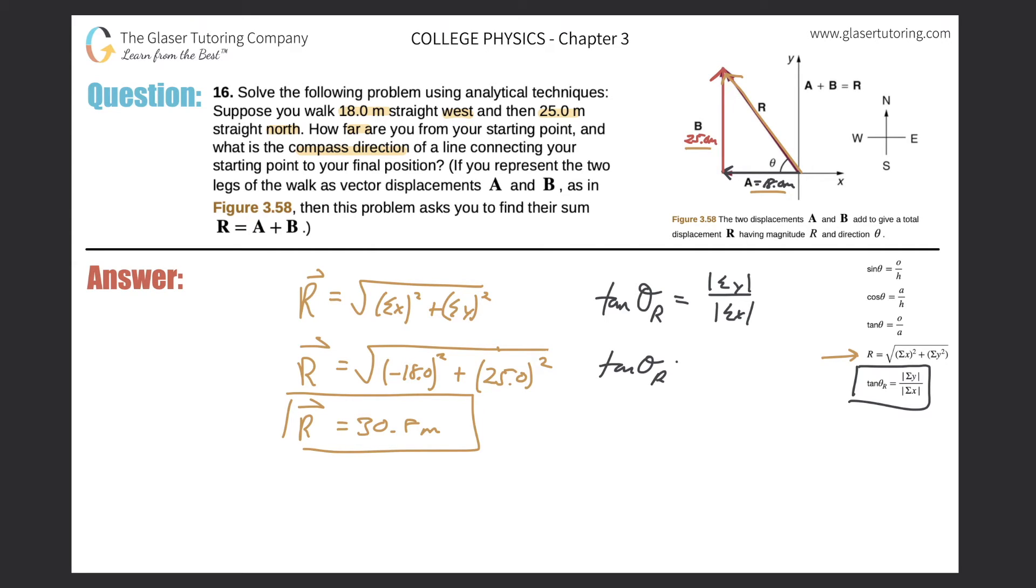Okay, great. So tan theta of my resultant vector should be my y component, 25, over my sum of all the x's, which was just simply negative 18, right? But we're going to take the absolute value of them. So that should simply be 25 over 18 because absolute value, we get rid of the negative sign. So now this is going to be 25 over 18, so 1.39. So tan of theta is equal to 1.39, and simply do the inverse tangent now to solve. So hit second tan on your calculator, assuming you have a TI-83 or 84 or 89, and then enter 1.39.